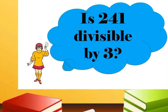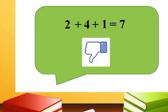Now let's proceed to the next example. Is 241 divisible by 3? Let's add the digits: 2 plus 4 plus 1 equals 7. So 241 is not divisible by 3 because 7 divided by 3 is 2 point something — it is not a whole number.